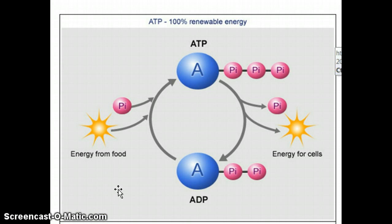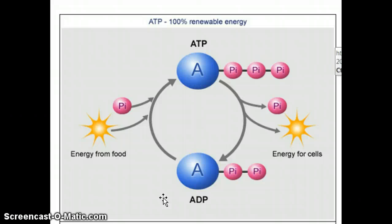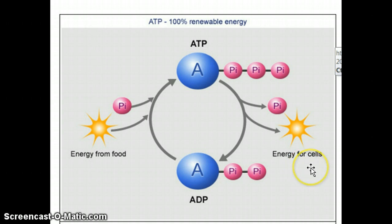So energy comes from somewhere and energy goes to do something. There's nowhere in this picture where energy is created, made, or generated. Watch that in how you say something in an essay or in a lab about energy — don't think it's made or created. Energy is always somewhere; it's either in the food we're going to eat or it's being used for something. I hope that's clear. As always, if I've said something that's confused you, please send me a message and I'd be glad to explain it in more detail.